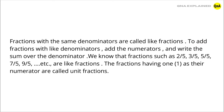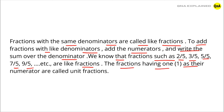Once again: fractions with the same denominators are called like fractions. To add fractions with like denominators, add the numerators and write the sum over the denominator. Fractions such as 2 upon 5, 3 upon 5, 5 upon 5, 7 upon 5, 9 upon 5, etc. are like fractions. The fractions having 1 as their numerator are called unit fractions.